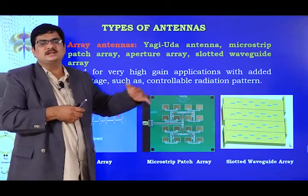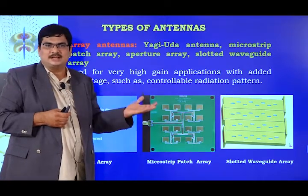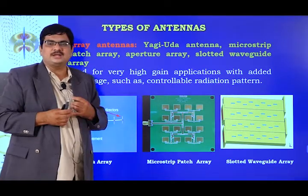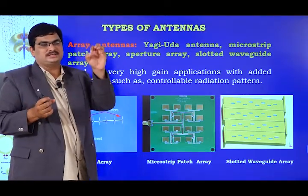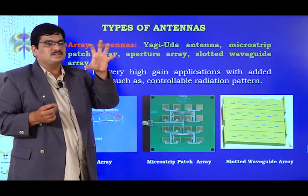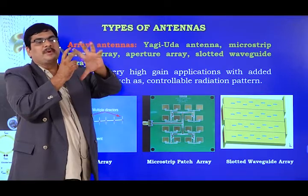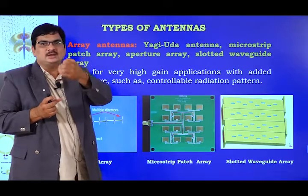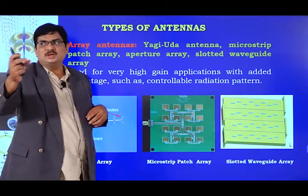These wire antennas are commercially available — you can even find them on Amazon. The next type is aperture antennas. Good examples of aperture antennas are waveguide antennas or horn antennas. On one side, the feed is a waveguide; on the other side, the aperture is an open flared structure, which acts as the antenna while the waveguide transmits electromagnetic waves from the source.